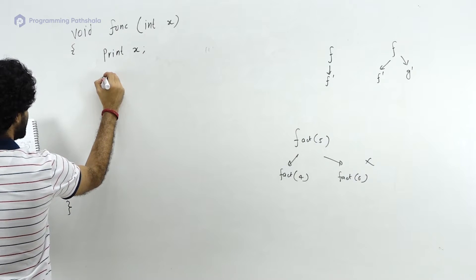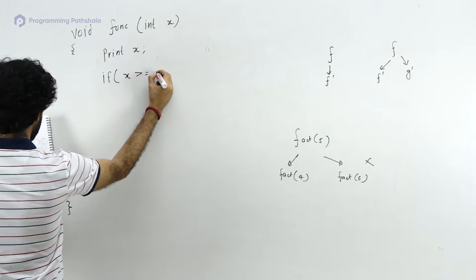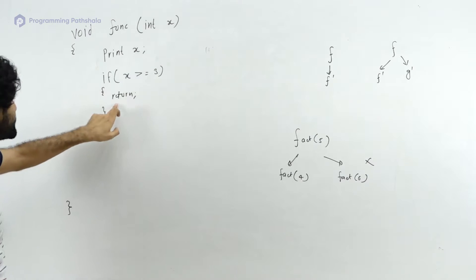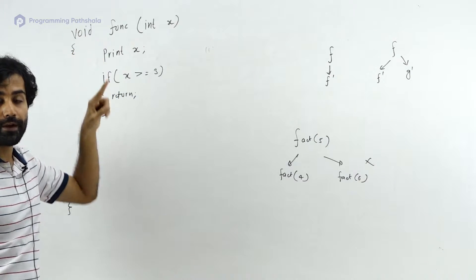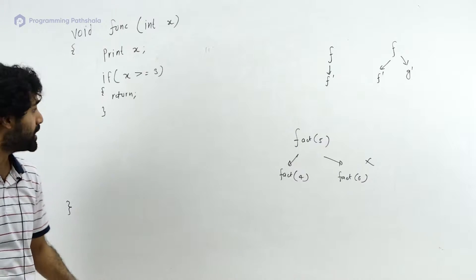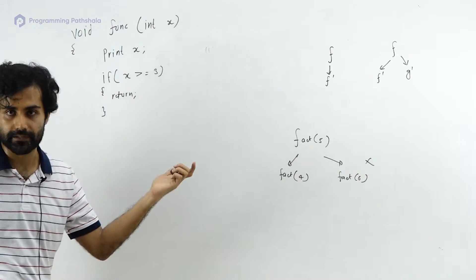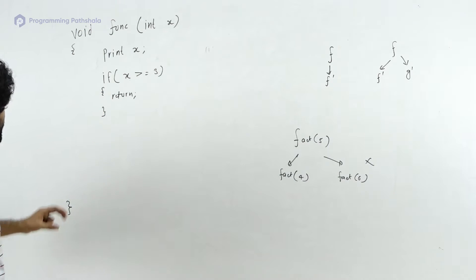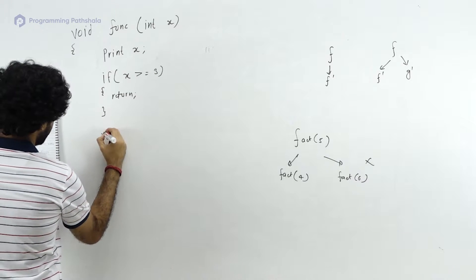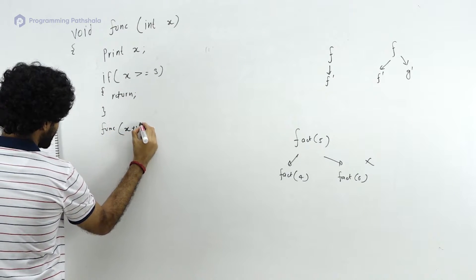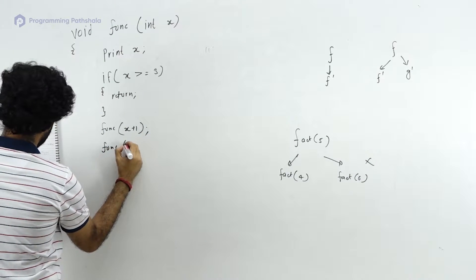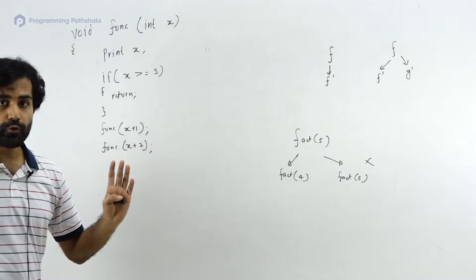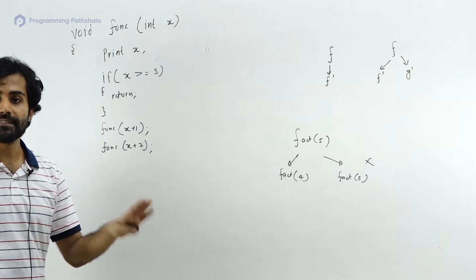The code first prints the value of x, then checks if x is greater than or equal to 3, in which case it returns. A return semicolon for a void function simply means exit. Then there is a call to func(x+1), and after that a call to func(x+2).